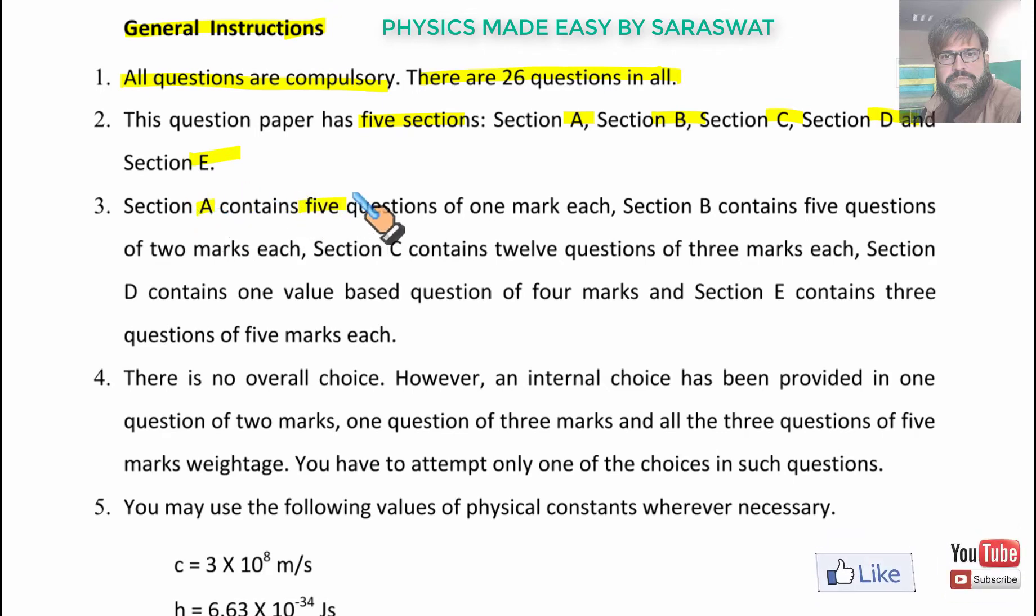Section A has 5 questions of 1 mark each. Section B has 5 questions of 2 marks each. Section C has 12 questions of 3 marks each. Section D has 1 value-based question of 4 marks and Section E contains 3 questions of 5 marks each. However, an internal choice has been provided in 1 question of 2 marks, 1 question of 3 marks and all the 3 questions of 5 marks each.